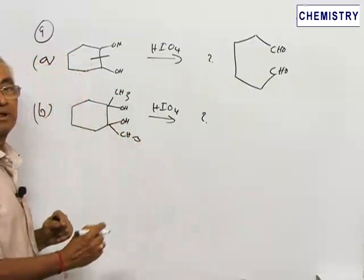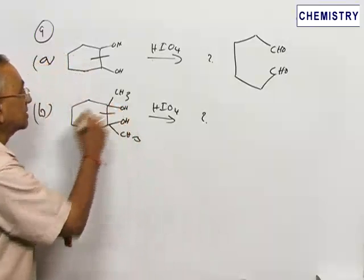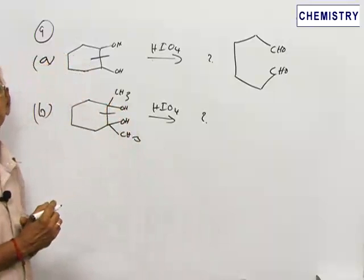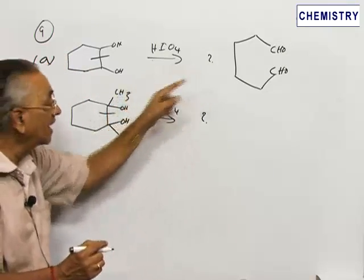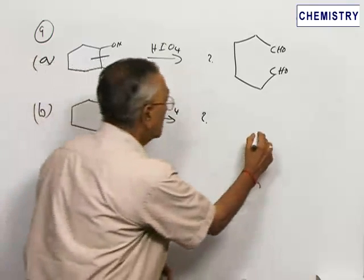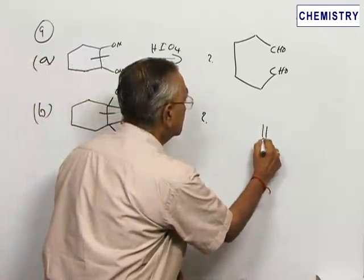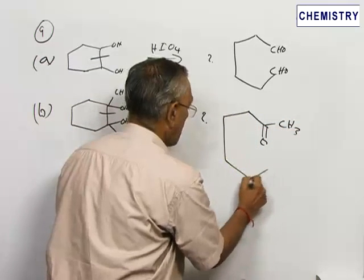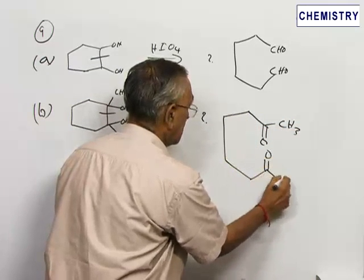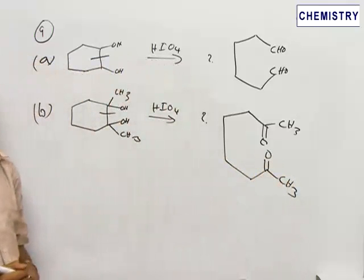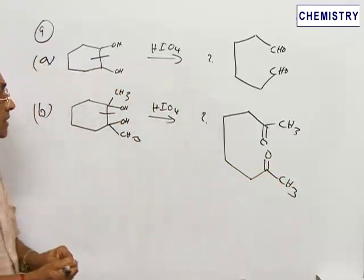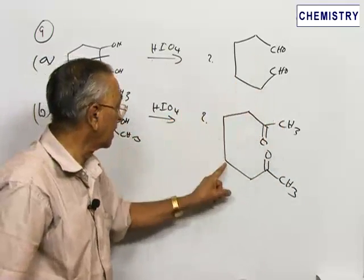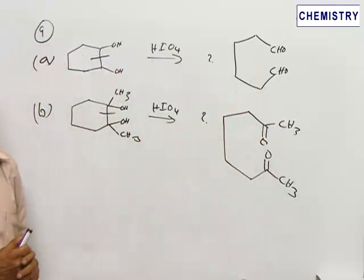Now coming to the next question, this also undergoes oxidative cleavage because it is also a 1,2-diol. The only difference is there is an extra methyl group present. Therefore, this will not give an aldehyde; it will give rise to a ketone. The open-chain compound now contains not 6 but 8 carbon atoms: 1,2,3,4,5,6,7,8.